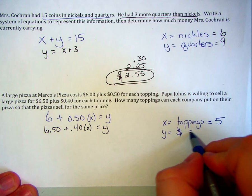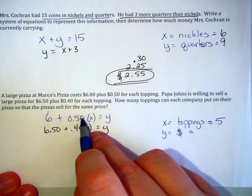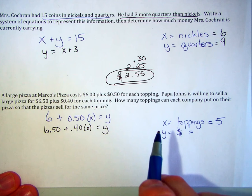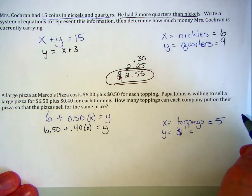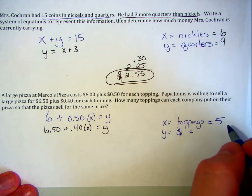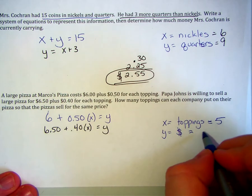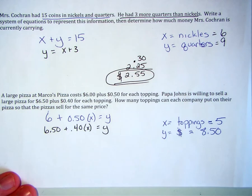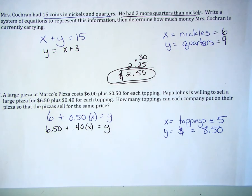And that would make the total cost five times fifty cents, which is $2.50. Plus, six dollars is going to be $8.50. That's the point at which they will be able to sell their pizzas for the same price with five toppings. Once you add the sixth topping, one pizza company becomes more expensive. Below five toppings, the other company is more expensive.